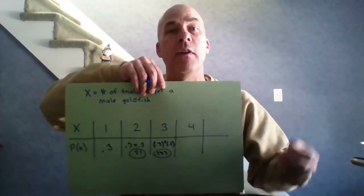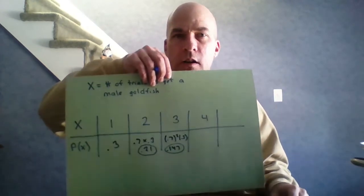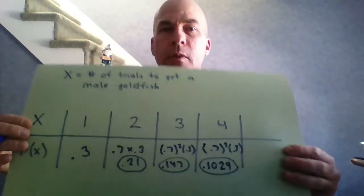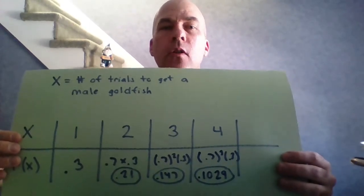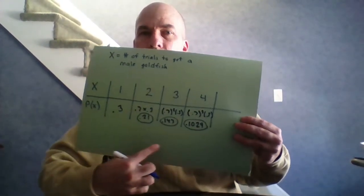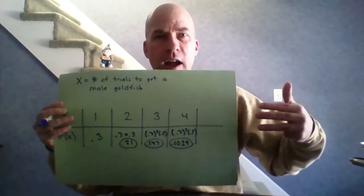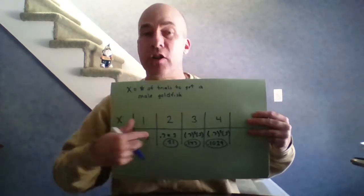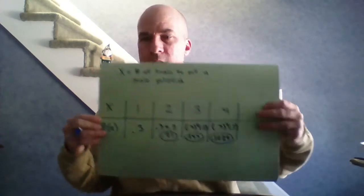For four trials, I would need to fail three times and then finally succeed: 0.7³ × 0.3 = 0.1029. Notice what's happening to these numbers — they're getting smaller and smaller. It could take five, six trials or more; those numbers would keep getting lower and lower. In theory this never ends, they just keep getting smaller, so we'll never ask you to write out the whole distribution — just pieces of it.